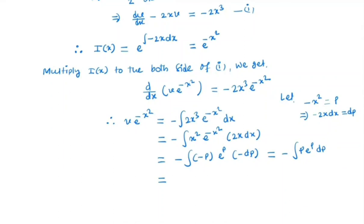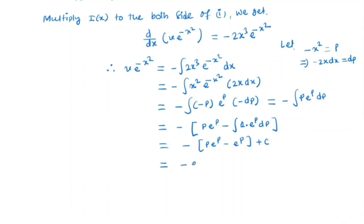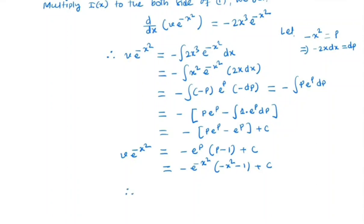By integrating by parts, we have p · e^p minus the integral of e^p dp, which gives p · e^p minus e^p plus C. Factoring out e^p, we get e^p(p minus 1) plus C. Substituting back, the left-hand side is v · e^(minus x²), and putting p = minus x² we get e^(minus x²)(minus x² minus 1) plus C. Multiplying both sides by e^(x²), we get v = minus x² minus 1 plus C · e^(x²).